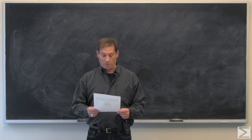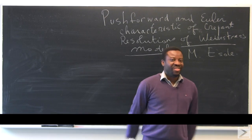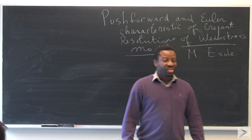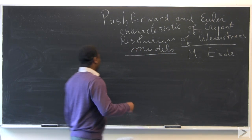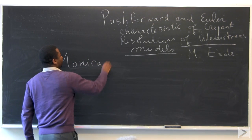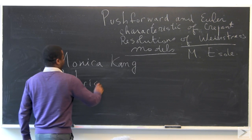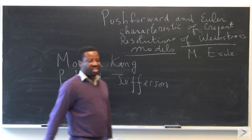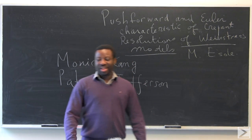It's my pleasure to welcome Mboyo Esselet of Northeastern University, who will speak to us today about push forward and Euler characteristic of crepant resolutions of Weierstrass models. This is a work in collaboration with Monica Kahn, who is sitting in the first row here, and Patrick Jefferson. They are both graduate students in the physics department at Harvard; they took classes of algebraic geometry with me, and now they are like algebraic geometry ninjas.